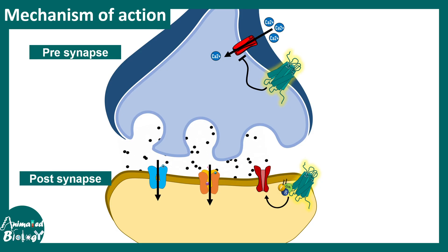Let us look at the synapse and try to understand what type of synaptic modulation opioids can do with the help of opioid receptors. Opioids bind to these receptors, and opioid receptors have distinct pre-synaptic and post-synaptic actions.